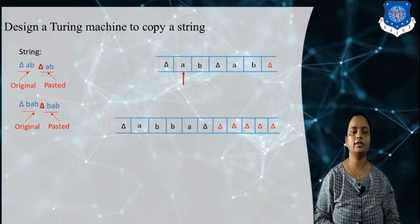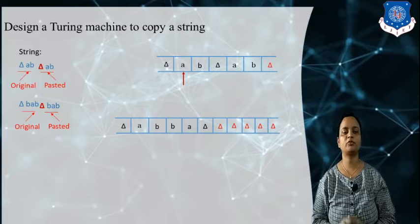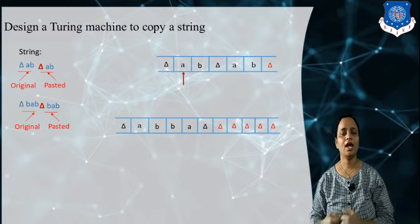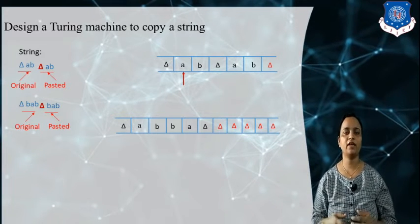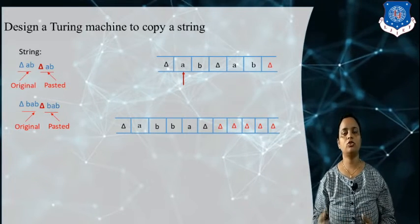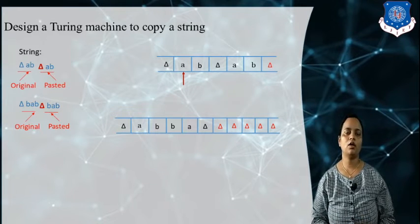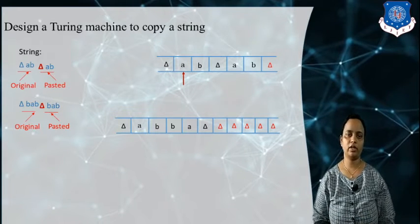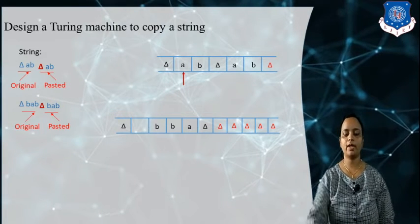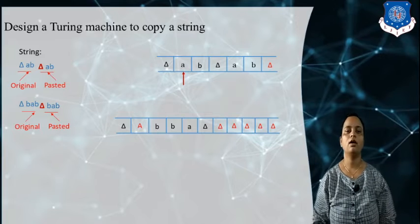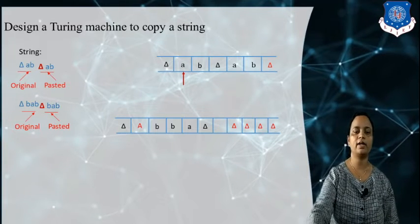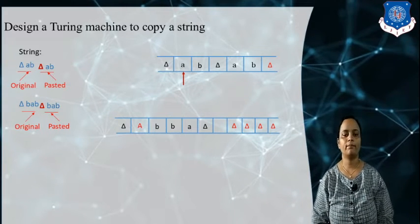Now let's take another example. Our input string is a b b a, and we need to generate a copy of this input string. Again, the first a is replaced by capital A, then the tape head moves to the first empty delta which is replaced by small a.